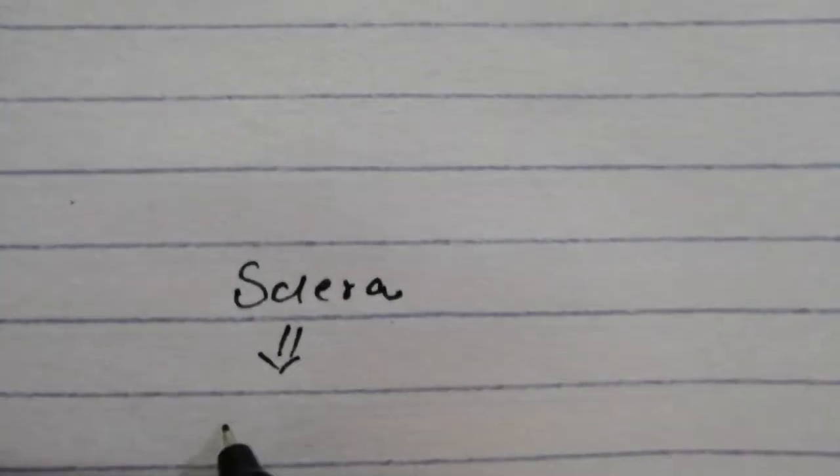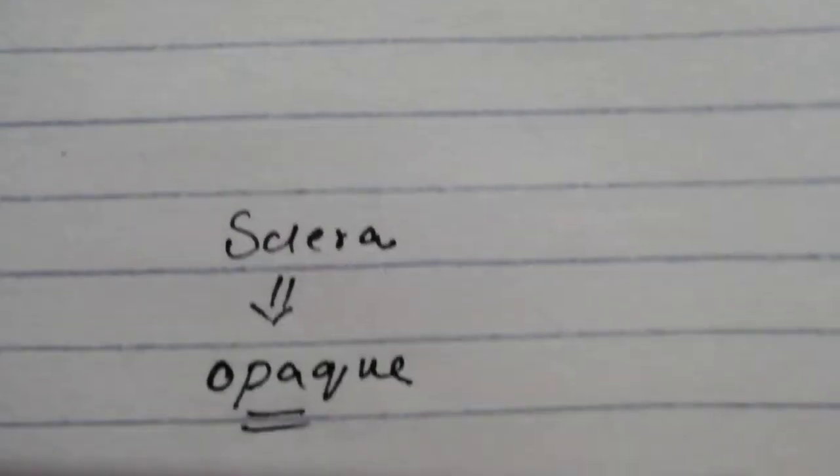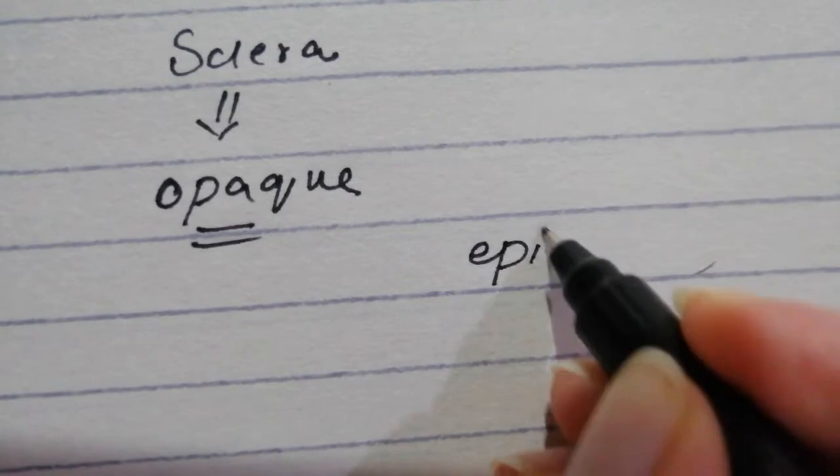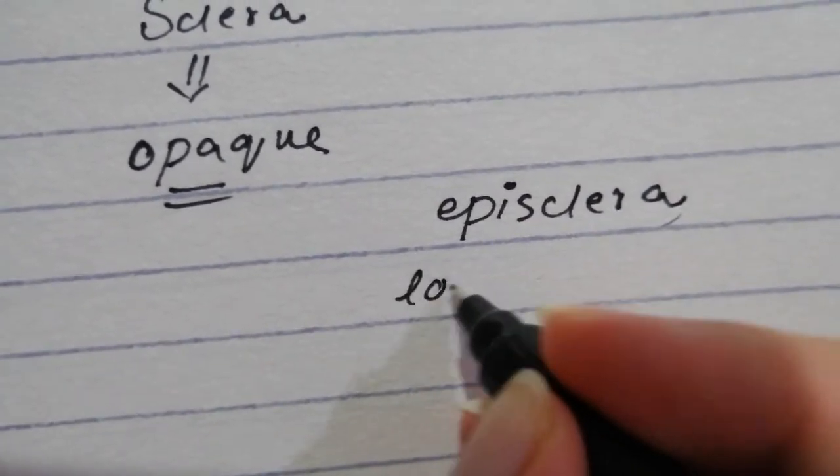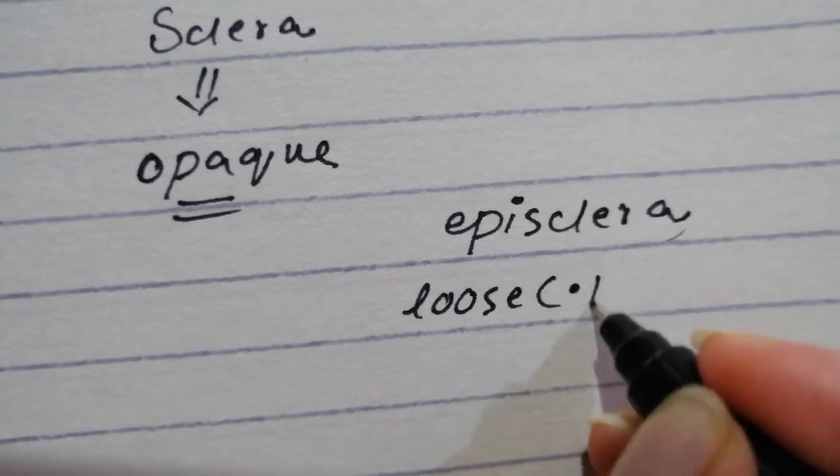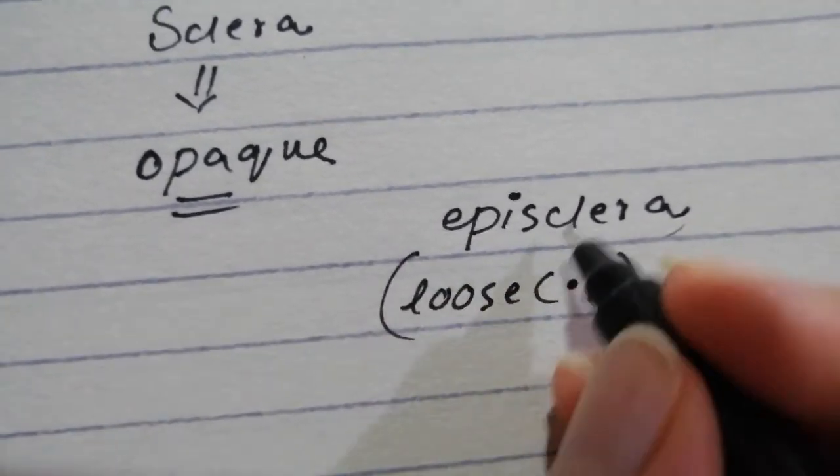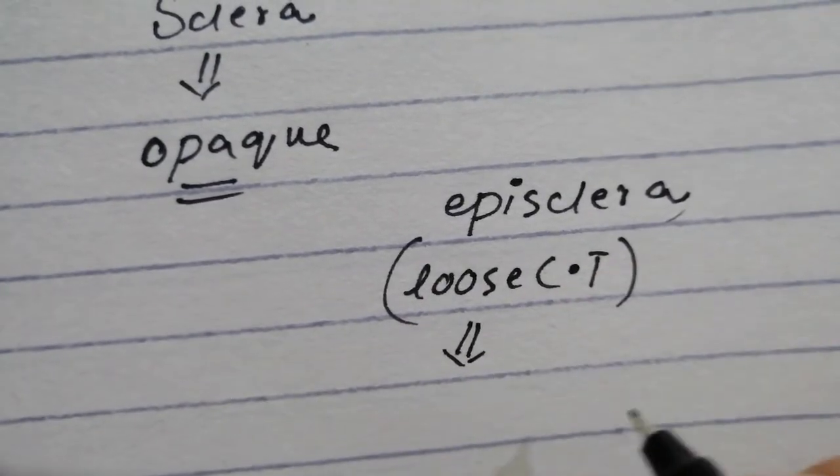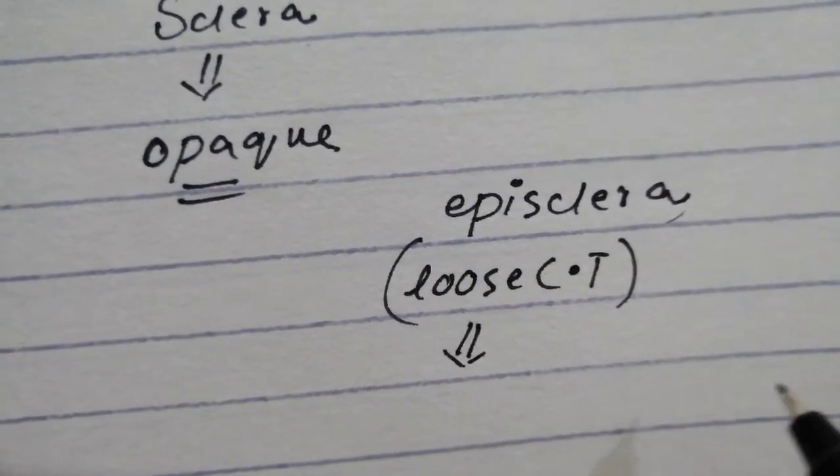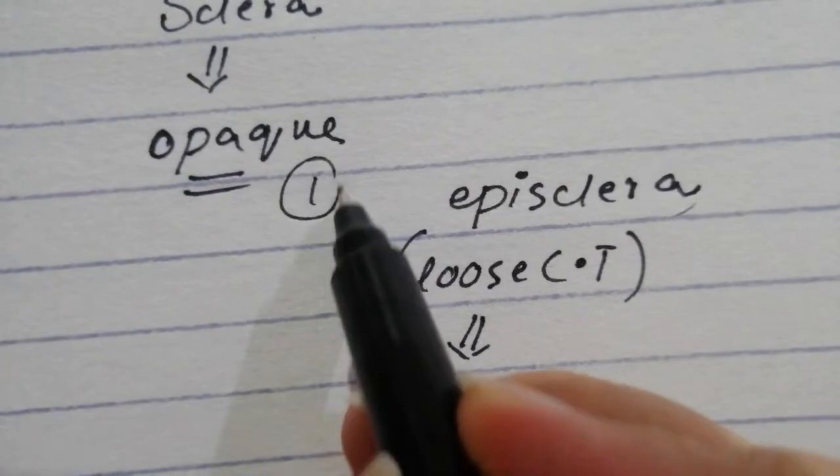When we talk about the sclera which is opaque unlike the cornea, there are three layers. We are going from outside to inside. We start with the episclera. The episclera is simple loose connective tissue. The main thing it does is that it connects the sclera to the fascial sheath of the eyeball which is surrounding the orbit in which the eyeball is placed.